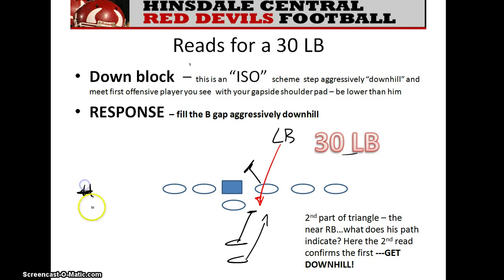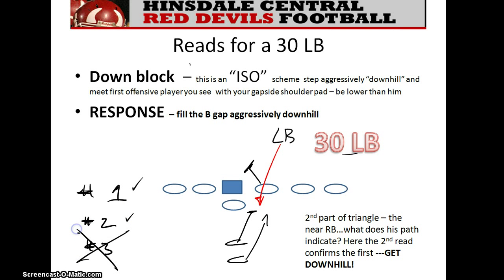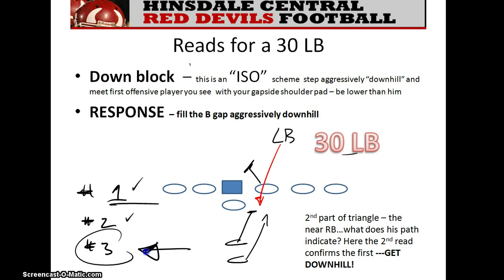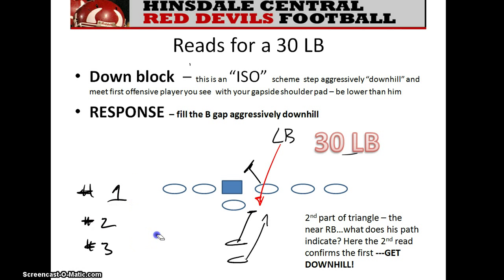There are three parts of the triangle: number one, number two, and number three. If the number one part of the triangle tells you to do something, and the number two part confirms that, then it's over — you don't need to worry about anything else. It's the correct response. But if the number one read conflicts with the number two read, you've got to go to number three. If you're uncertain, you go to number three to be free. If the first read coincides with the second read, it's game, set, match — you're good to go.